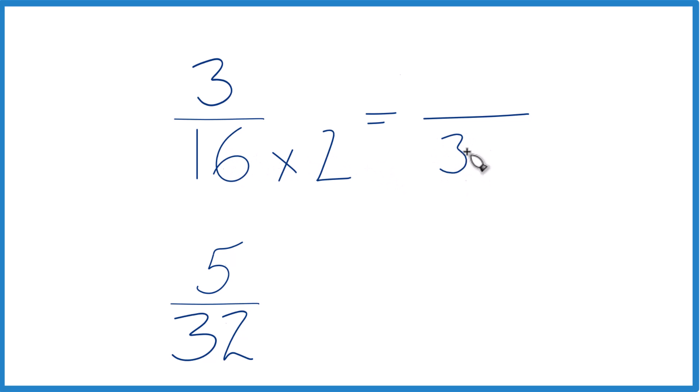16 times 2, that's 32, and then I can't just multiply the denominator, I need to multiply the numerator as well by 2. 3 times 2 is 6.